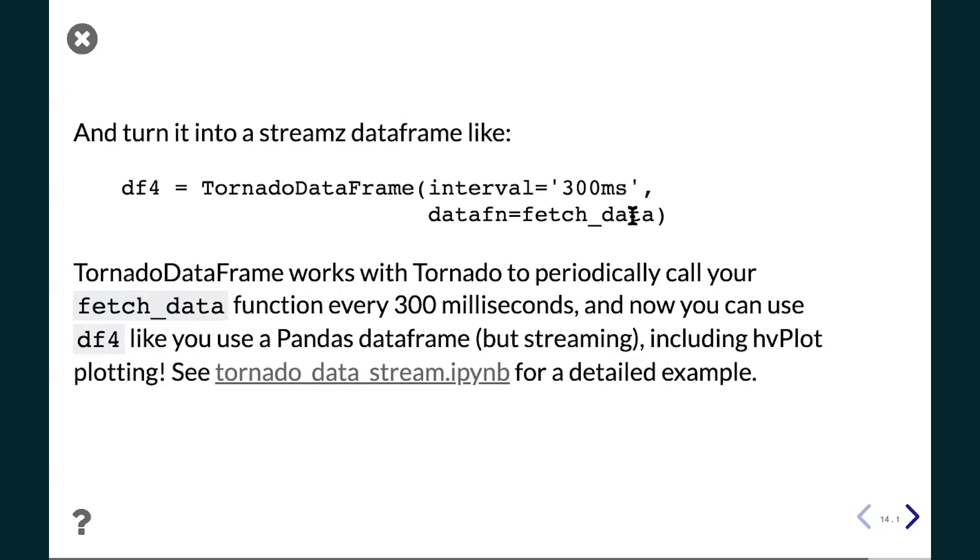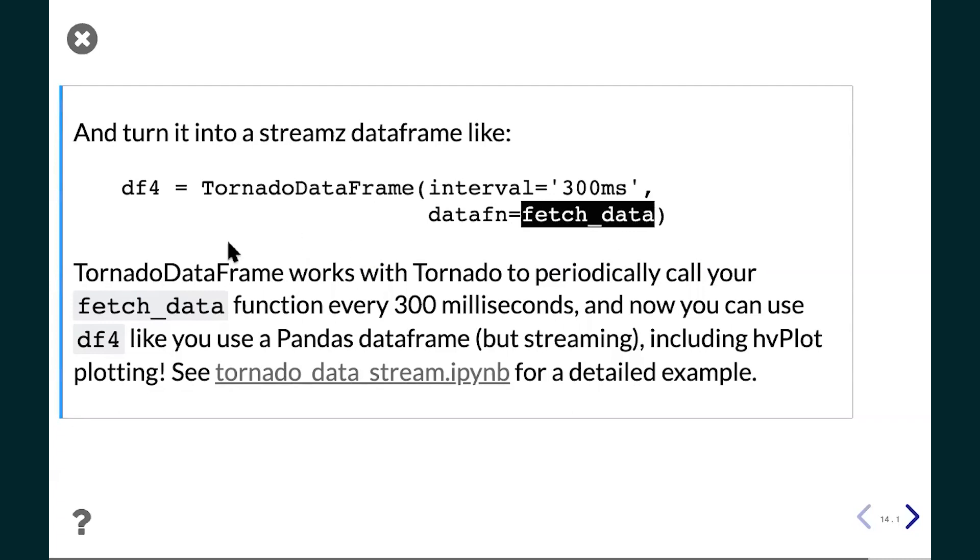And then you can plug it into a little class I wrote called TornadoDataFrame. And here I've passed in the name of that function. All this is going to do is set up an interface to the Tornado IO loop and say that every 300 milliseconds run this function. And that's it. That's all you have to do. Tornado will automatically call this function every 300 milliseconds. You'll end up with a dataframe here that you can show or that you can plot. And you can use hvPlot on that at that point.